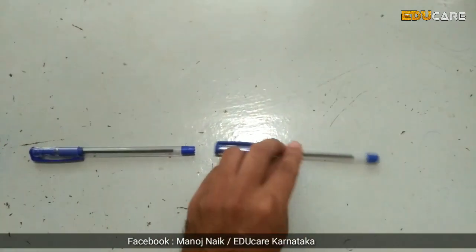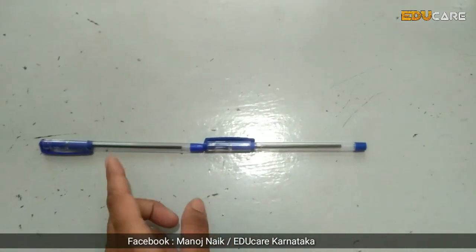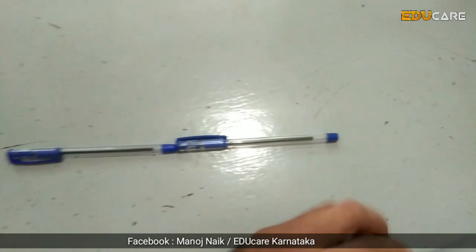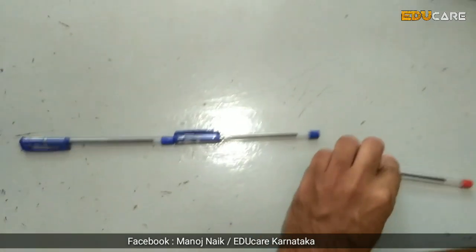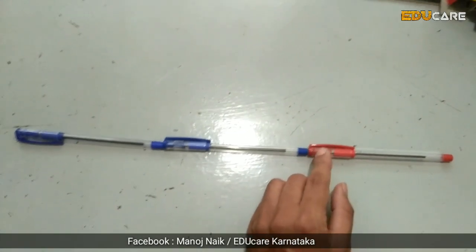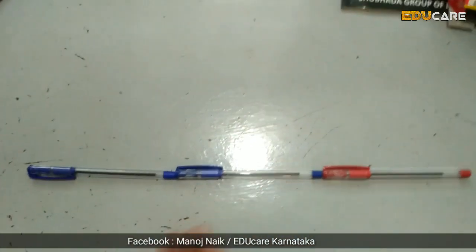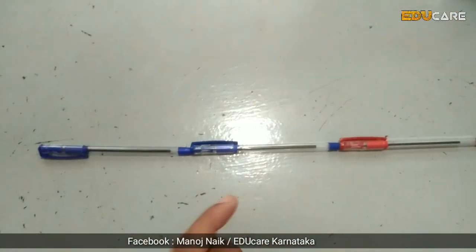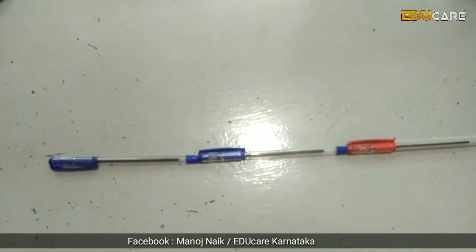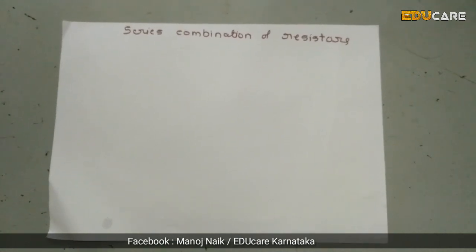This tip is called a table. This is how we use the resistors and the load of the resistors. This is the series combination of resistors. This is the diagram and the bits.